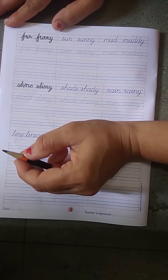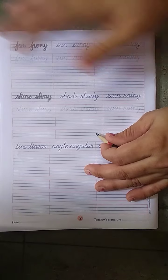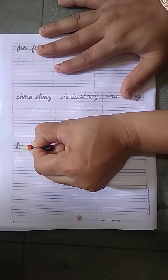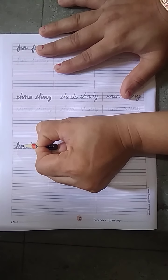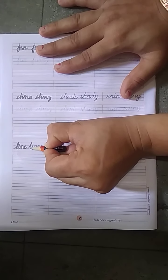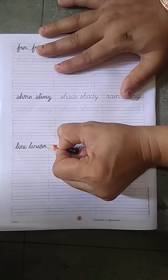Then L, I, N, Y. Okay. Then Linear. Linear. L, I, N, E, R.